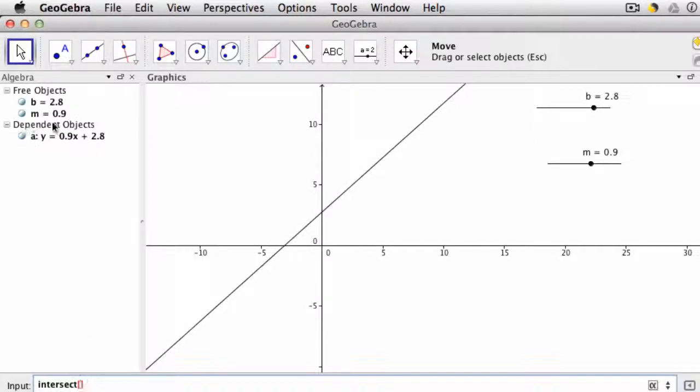Notice up here under dependent objects it gives the name of your line as line A. So I'm going to intersect A with the y-axis, make the A capital on axis, and it'll create that point.